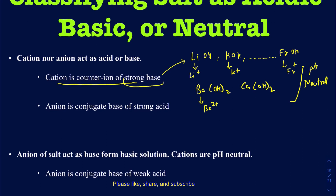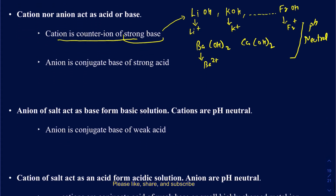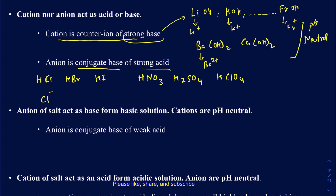Now let's talk about what type of anions are going to be pH neutral. Those are going to be the conjugate bases of your strong acids. There are only six strong acids: HCl, HBr, HI, and three oxy-acids — HNO3, H2SO4, and HClO4. So as soon as you see anions like Cl−, Br−, I−, NO3 1−, SO4 2−, and ClO4 1−, those anions are going to be your pH neutral.